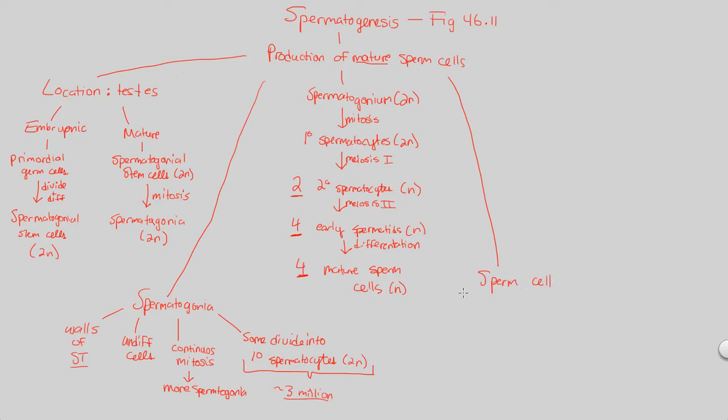A mature sperm cell will have three major structures to remember. It will contain a head region, and this is also shown in figure 46.11. This head region will house the nucleus, and that's very important. Why is the nucleus important? This is where half your genes come from. This is where half your genes are stored, from your father, and thus this is going to be found at the head region of the sperm cell.